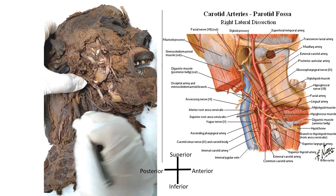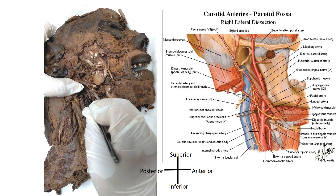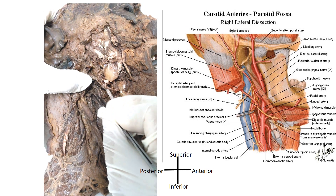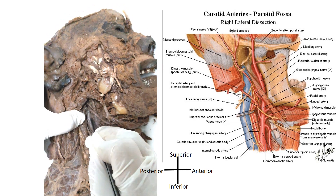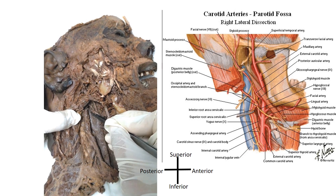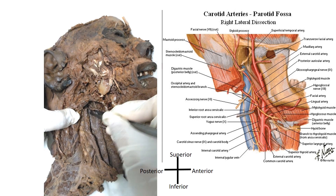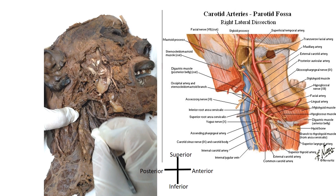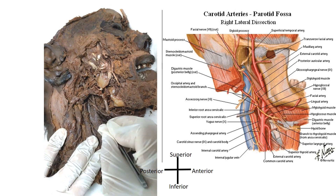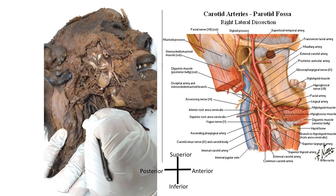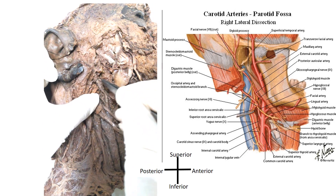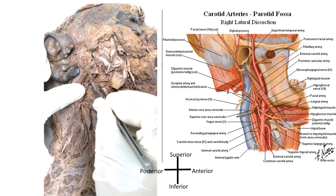Another branch of the external carotid artery, a posterior branch, is the occipital artery. A medial branch is the ascending pharyngeal artery. So in the carotid triangle we can see three branches: the superior thyroid artery, the lingual artery, the ascending pharyngeal artery, and the occipital artery. Behind the neck of the mandible, the external carotid artery divides into the maxillary artery and the superficial temporal artery, which cannot be seen here without further dissection.